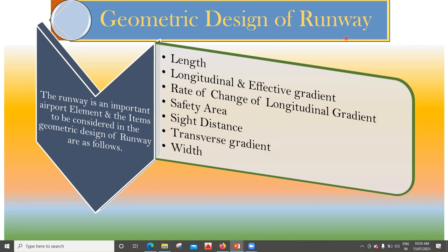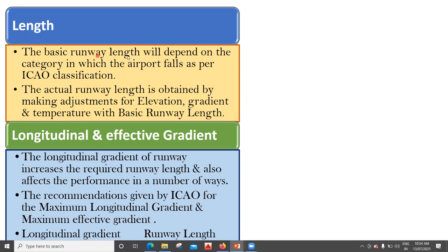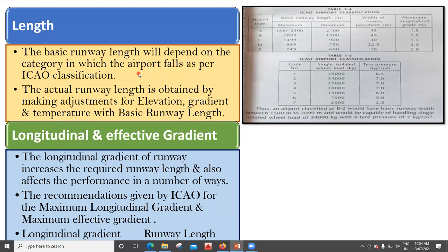The first is about the length. The basic runway length will depend on the category in which the airport falls as per the ICAO classification. If you remember, in the first lecture, we had understood that there's something called airport classification, and based on this classification we have airport A, B, C, D, and E. Here we have something called basic runway length, which is given as minimum and maximum for the type of airport.